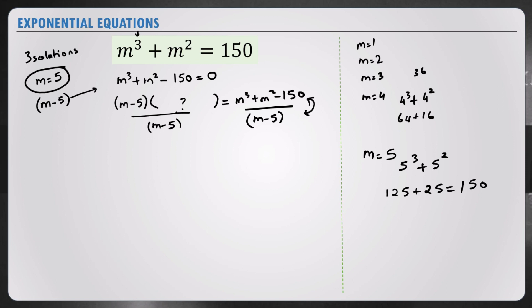Let's divide m cubed plus m squared minus 150 by m minus 5 using long division. We have m minus 5 dividing m cubed plus m squared plus we need a space for m to the power of 1, minus 150. We always remember this when we do long division. We need spaces for each of the exponents. We start here, we get m squared, and we have m cubed minus 5m squared.